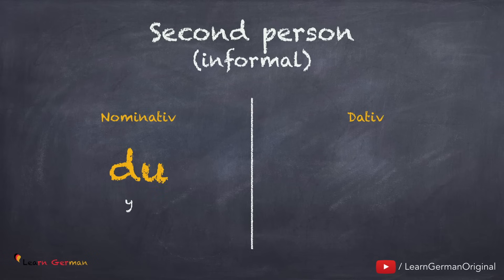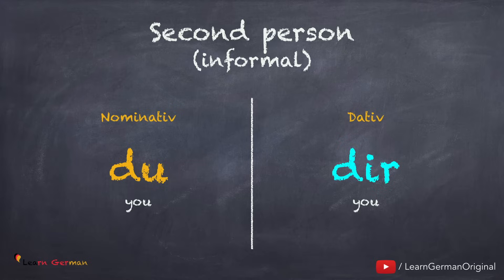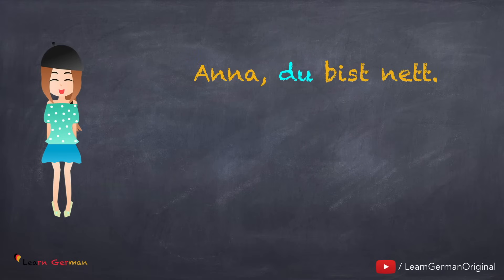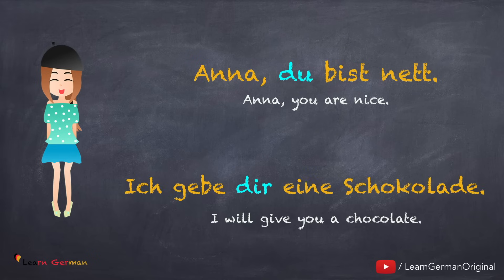Second person informal: du in dative, the personal pronoun is dir. Let's see how to use this in a sentence: 'Anna, du bist nett. Ich gebe dir eine Schokolade.' In this sentence, ich is Nominativ, eine Schokolade is accusative, and dir is the dative object. In dative, the personal pronoun du changes to dir.